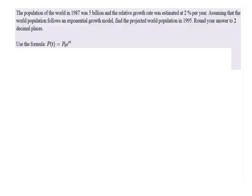The population of the world in 1987 was 5 billion, and the relative growth rate was estimated at 2% per year. Assuming that the world population follows an exponential growth model, find the projected world population in 1995. Round your answer to two decimal places.